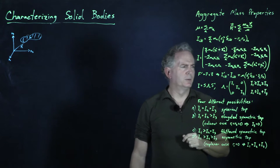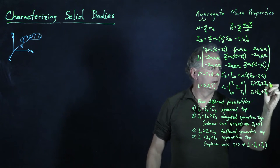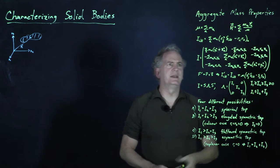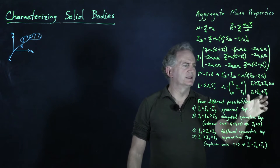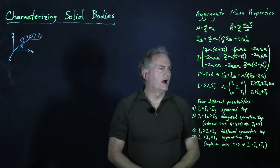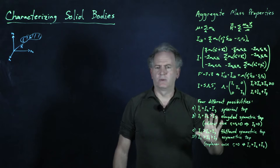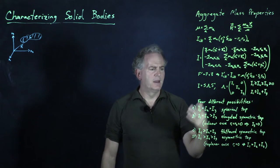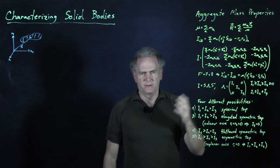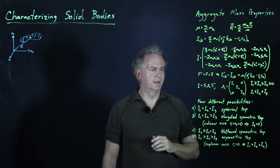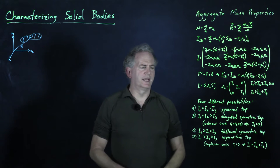I1, I2, and I3 are the principal moments of inertia, arranged in descending order, and they are all greater than or equal to zero. From this, I1 ≤ I2 + I3. There are only four possibilities for how I1, I2, and I3 can work out. If all three are equal to each other, we call that a spherical top. A special case of a spherical top is like a basketball, but other cases are possible as well.